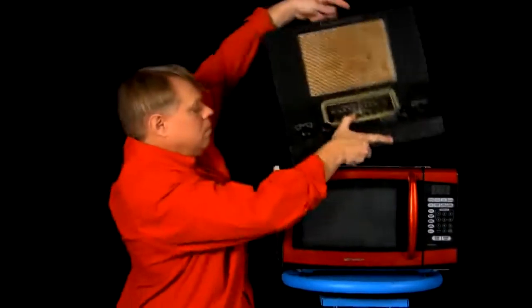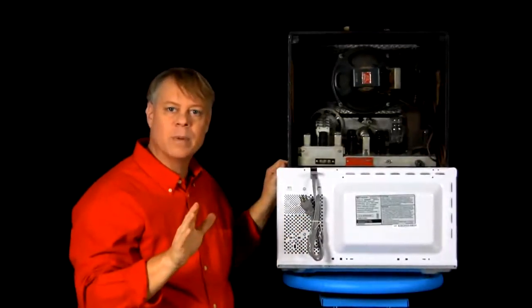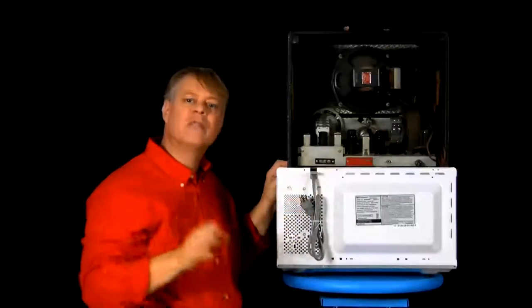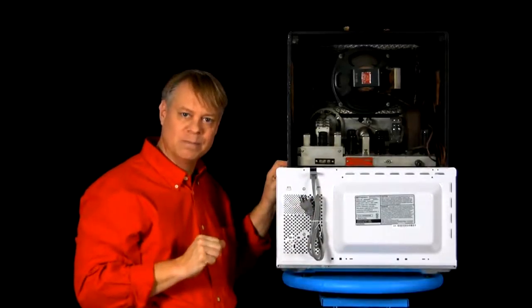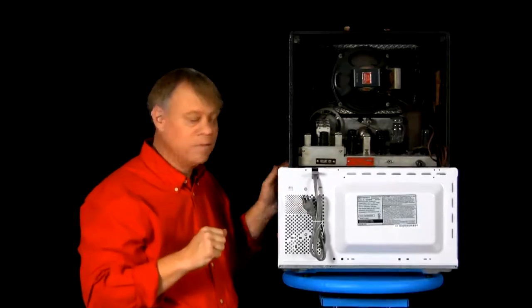Now, if you picture a vacuum tube at all, it's likely in a radio like this. Inevitably, tiny transistors and microchips replaced clunky vacuum tubes, but it's too soon to relegate them to the museum. Microchips can't easily replace tubes for producing power, for example, in heating food.